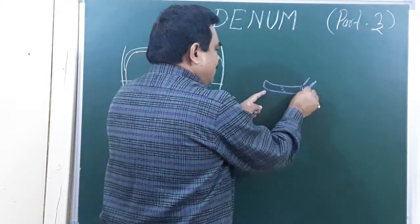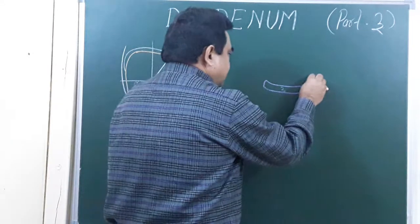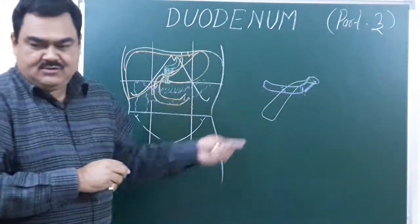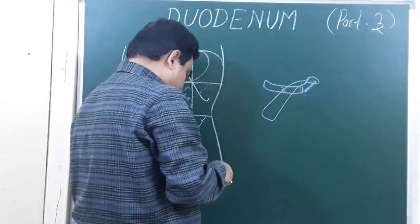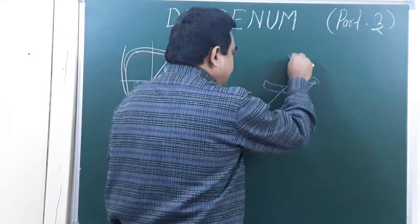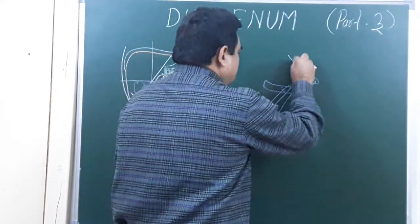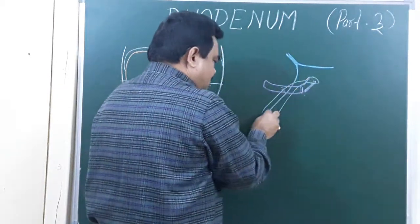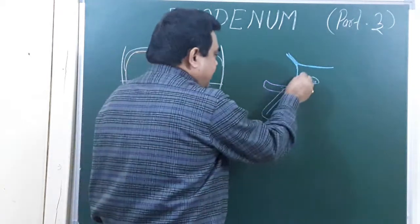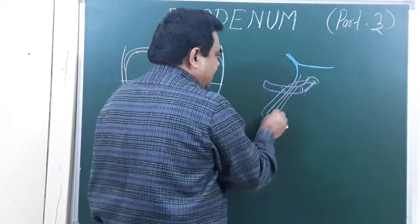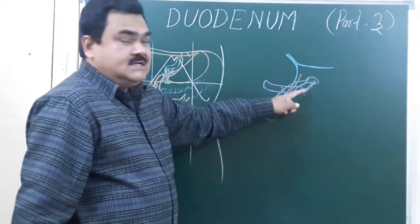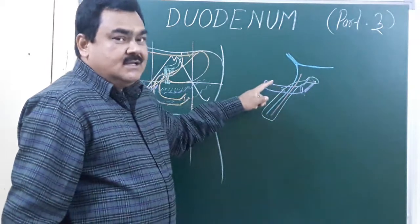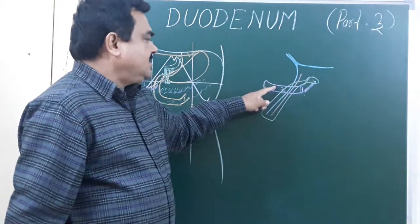This is the third part and this is the fourth part. Here is the root of the mesentery. Here you can see the root of the mesentery, and here is the superior mesenteric vein. The splenic vein joins with the superior mesenteric vein to form the portal vein. So it contains the superior mesenteric vein and superior mesenteric artery — these structures cross the third part from the anterior side, forming the anterior relations of the third part.